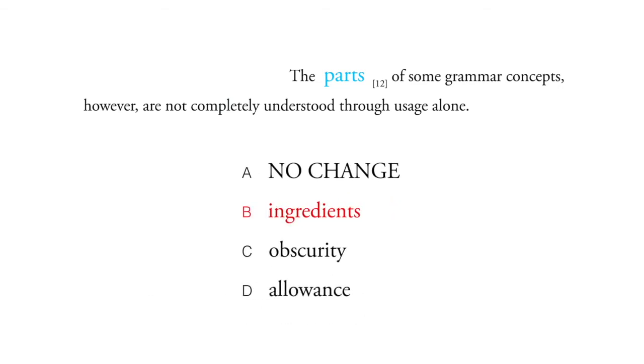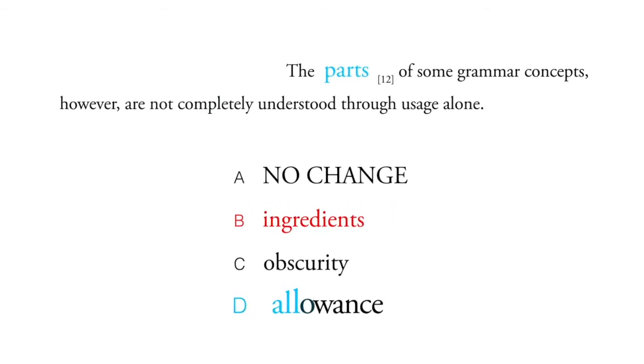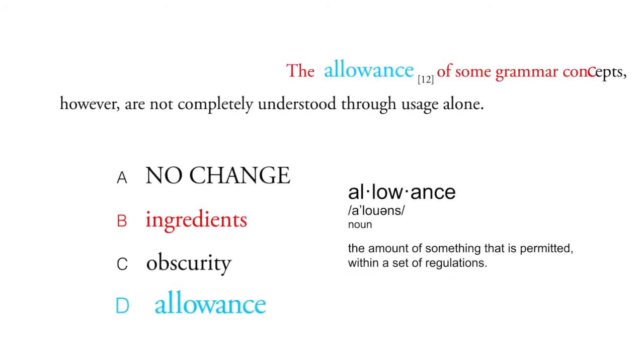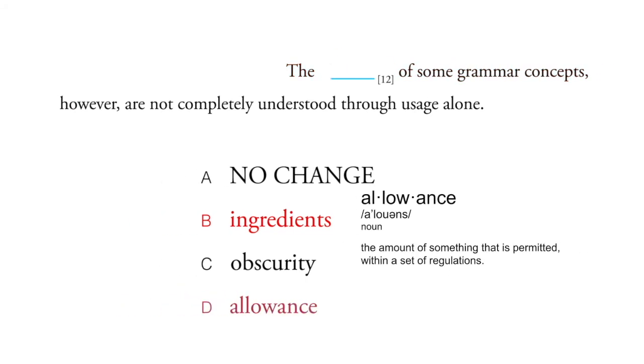And there's almost always some strange word like allowance. That doesn't even make any sense when you plug it in. The allowance of some grammar concepts? So D is wrong.